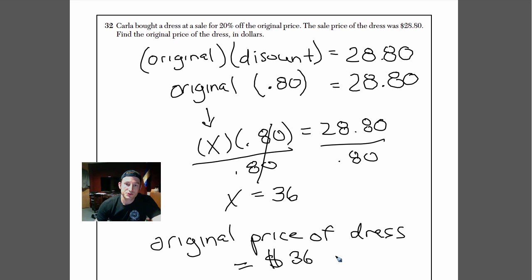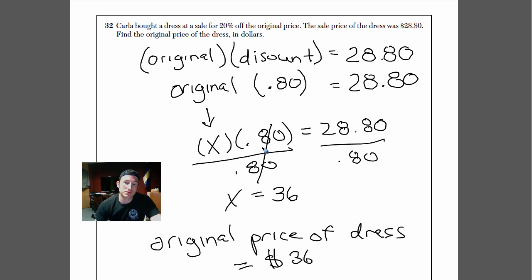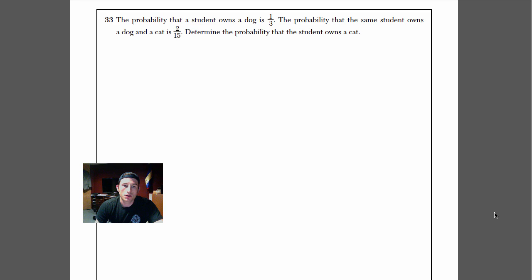The original price of the dress equals $36. So if there's a 40% discount, you'd multiply by 0.6. A 10% discount, you'd multiply by 0.9. You're just taking the difference compared to 100. A 50% discount? You pay 50%, so you'd use 0.50.